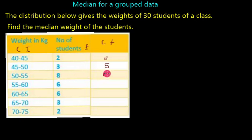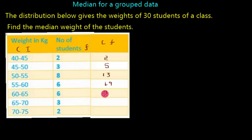If we go on finding the cumulative frequency: 6 plus 13 is 19, the number of students whose weight is less than 60. Then 19 plus 6 is 25, the number of students whose weight is less than 65. Then 25 plus 3 is 28, and 28 plus 2 is 30, which gives the total number of students.